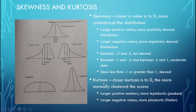Lastly, kurtosis talks about how flat or peaked your data is. Platycurtic data is very flat. Leptocurtic data is more peaked than a normal distribution. A kurtosis score closer to 0 means it looks more like a normal distribution. Larger positive numbers mean your data is more peaked — leptocurtic. Larger negative values mean you have a more platycurtic, flatter distribution.